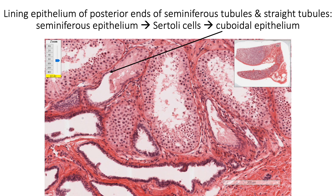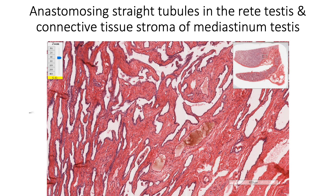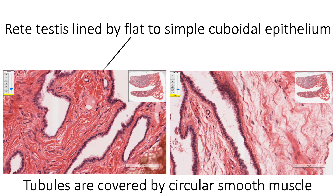The posterior part of the seminiferous tubules has fewer cell layers in the seminiferous epithelium, appearing shorter in height. As the straight tubule is approached, the tubules gradually come to be lined only by Sertoli cells, and then by simple cuboidal epithelium in the straight tubules. The rete testis shows anastomosing straight tubules in the connective tissue stroma of the mediastinum testis, lined by flat to simple cuboidal epithelium and covered by circular smooth muscle.